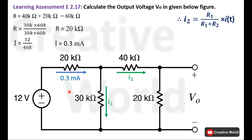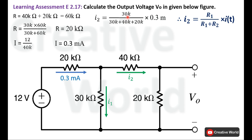R1 is 30 kilo ohm, and R2 is the sum of 40 plus 20 kilo ohm. Placing the values into the formula: I2 = 30 kΩ / (30 kΩ + 60 kΩ) × 0.3 mA. Solving this equation gives I2 = 0.1 milliampere.